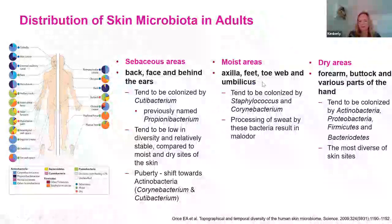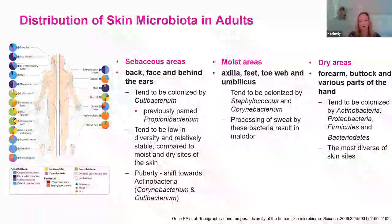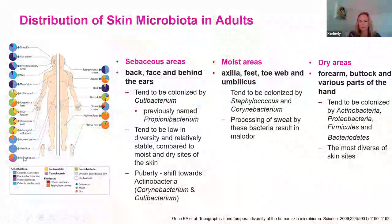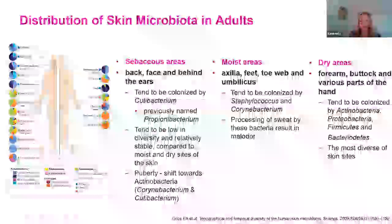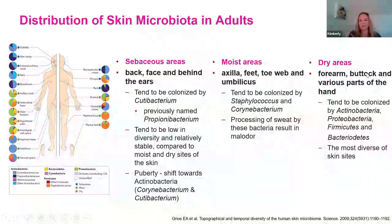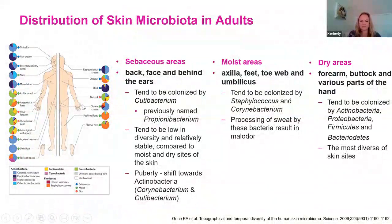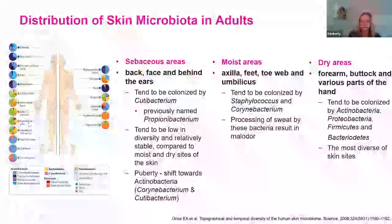The same applies to moist areas like the axilla, under your arm, the elbow crease, on your feet — these drive a very different kind of microbiome. You can see a lot of staphylococcus and corynebacteria present in those various areas. And then in dry areas like your lower leg, forearm, or hand, you see a lot more proteobacteria and other organisms, including staphylococci.